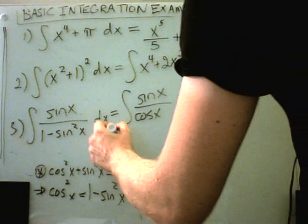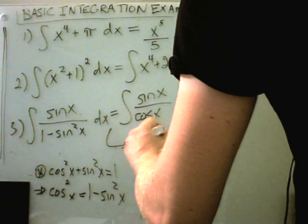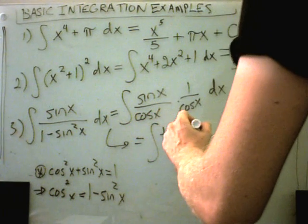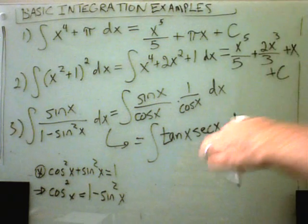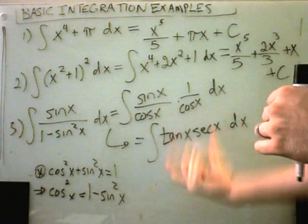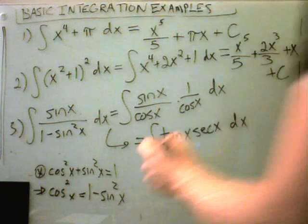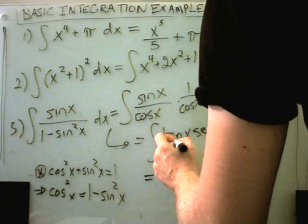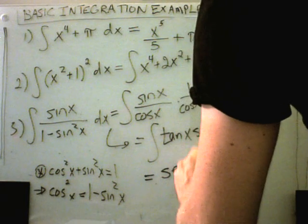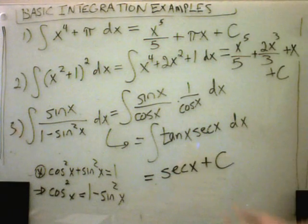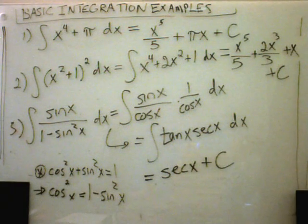And in this case, sine over cosine is tangent of x. One over cosine is secant of x. And now I think, is there a function whose derivative is secant x tangent x, or tangent x secant x? And yes there definitely is. So the antiderivative of tangent x secant x is just going to be plain old secant of x plus C. And again if you check, the derivative of secant is secant x tangent x, so this is the correct formula.